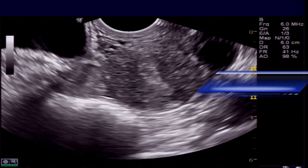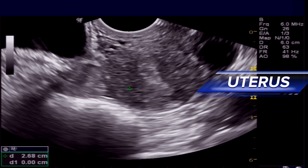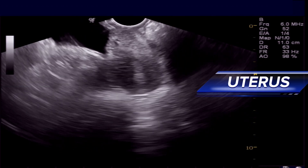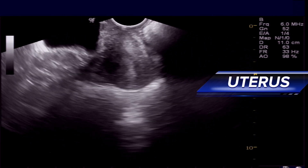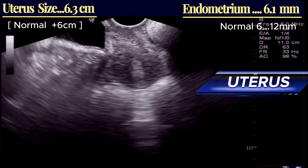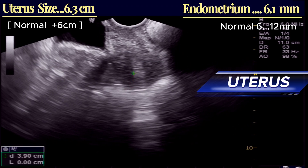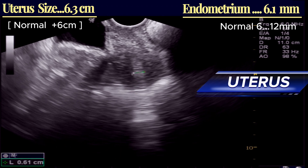This is the TVS ultrasound. First of all, take a brief look at the uterus. This is normal. There is no mass in the uterus. The uterine size is 6.3 cm and endometrium is 6.1 mm. This is normal.